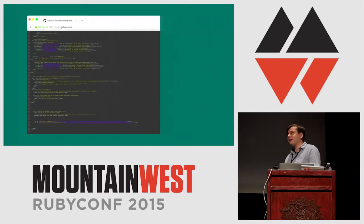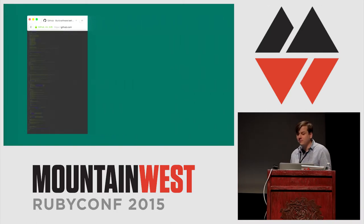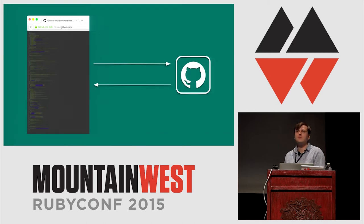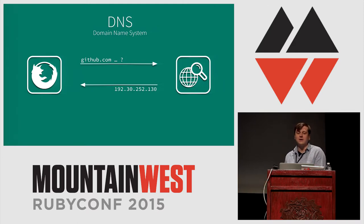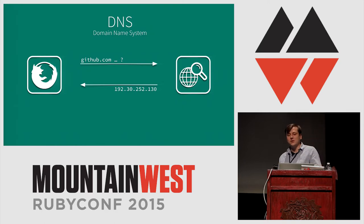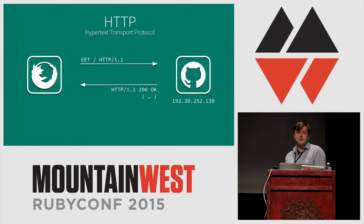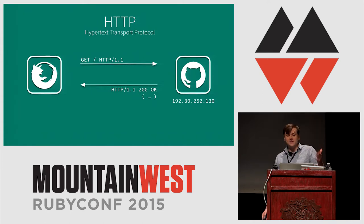We know that a browser needs blobs of text to function, but where does that text come from? The browser just asks GitHub. First we have to get GitHub's address — the domain name system is vast and intricate, so it's one of the layers of abstraction we'll leave mostly unexamined. But suffice it to say the browser asks DNS to look up the IP address of GitHub.com and gets an answer back. Now that we know GitHub's address, how do we ask it to send us the blobs of text? That's where the simple text-based protocol called HTTP comes in, which most of you probably know pretty well.